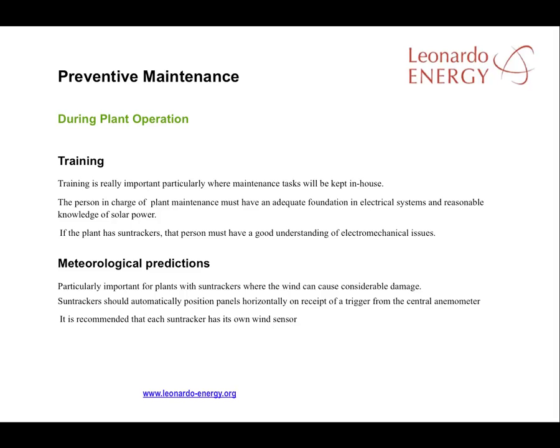Accurate meteorological measures are very important, particularly in plants with sun trackers, where the wind can have a major effect on performance. Many sun tracker systems will place modules in a protective position once they receive a warning signal from a central anemometer. A wind sensor for every sun tracker is the best solution, but that can be an expensive one.